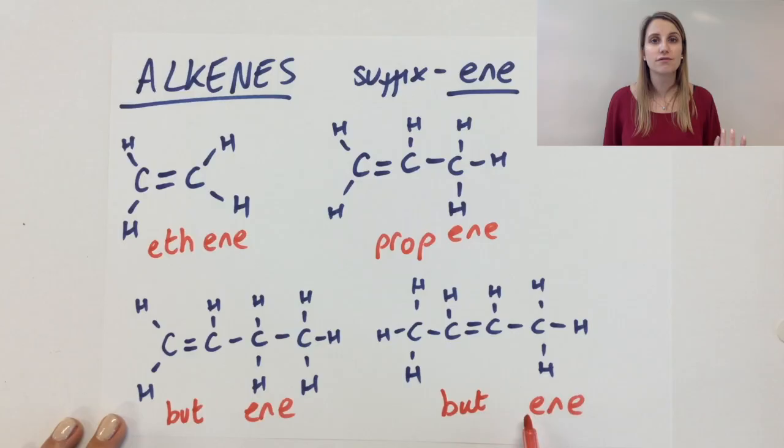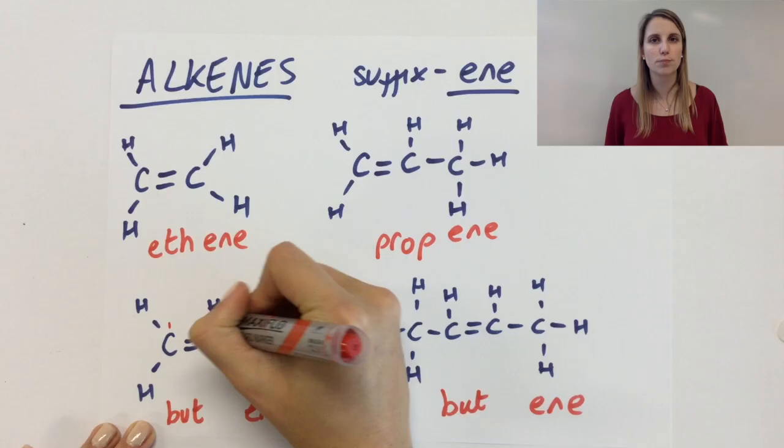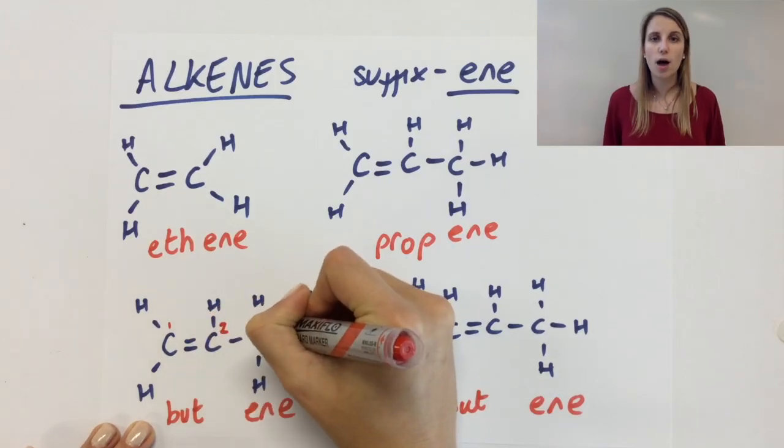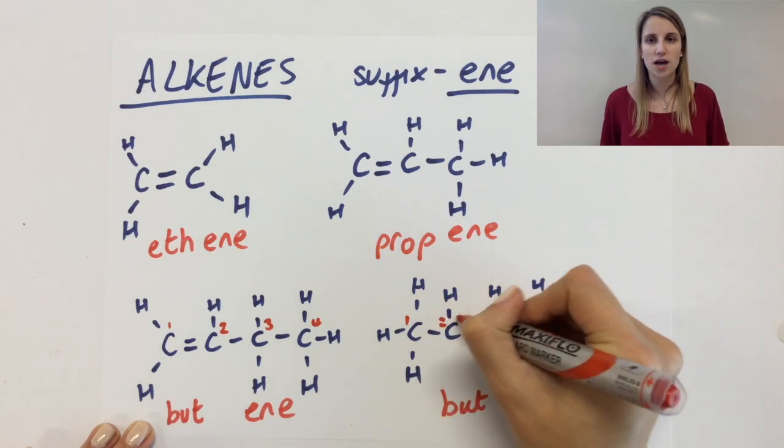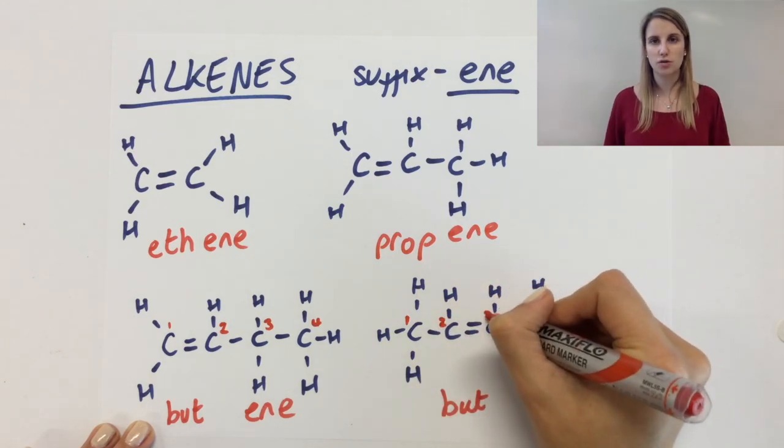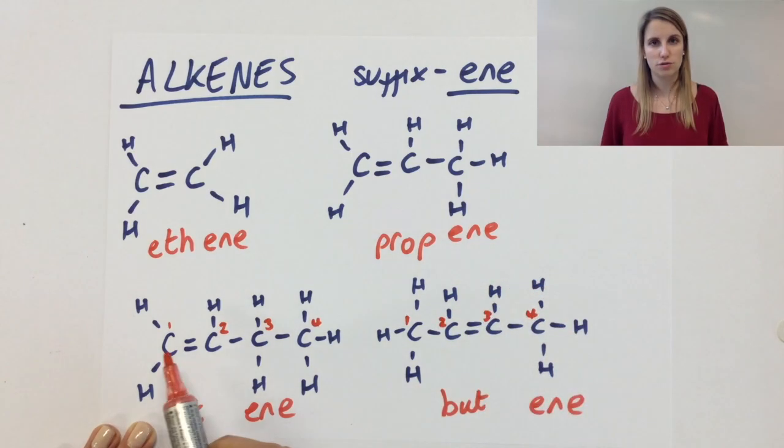Now the way that we differentiate between the two is that we count the number of carbons that the functional group is attached to. So basically I want to know where does the double bond start. So I'm going to number my carbons closest to the double bond. So if I go carbon one, two, three, four, one, two, three, four.